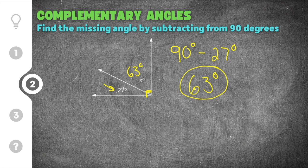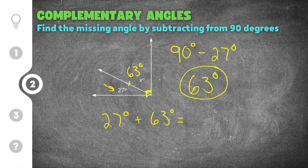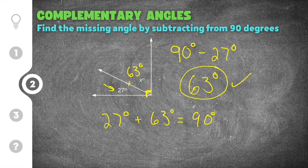And again, if you want to double-check, you can say, alright, well these two angles together have to equal 90, so we're going to say 27 plus 63 degrees. 27 plus 63 is 90, so we know that 63 degrees is our correct answer.